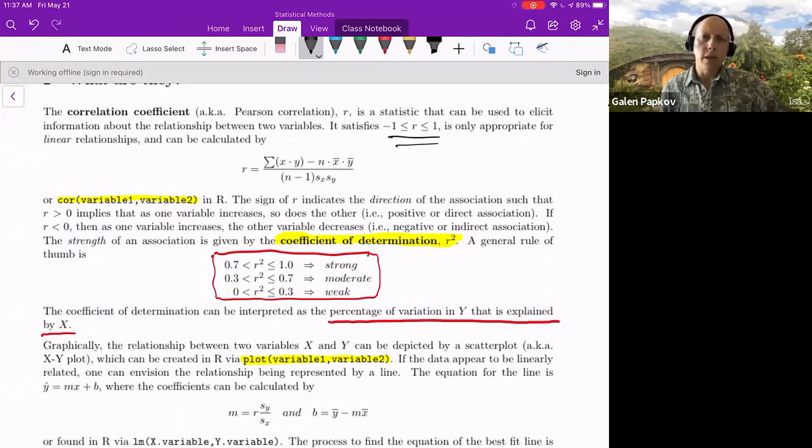r squared, if it's really large, if it's above 0.7, then you have a strong relationship. If it's below 0.3, it's weak. Excuse me, if it's in between, then it's moderate.